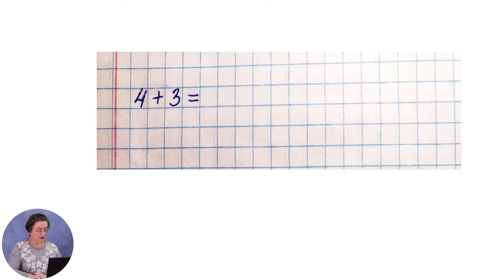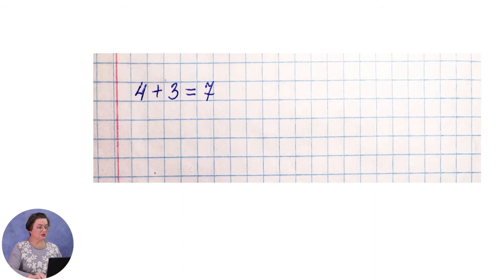Первый столбик. 4 плюс 3. Обращаем внимание: какое арифметическое действие? Правильно — сложение. Вспоминаем: 4 и 3 — это состав какого числа? Правильно, 7. Значит, записываем цифру ответа — 7.